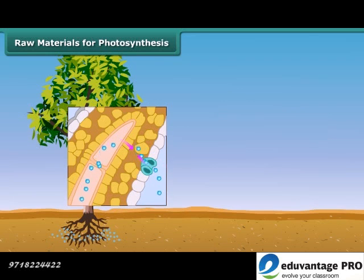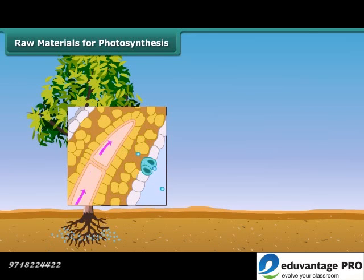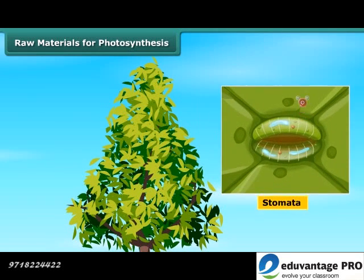Likewise, carbon dioxide from air is taken in through the tiny pores present on both surfaces of the leaves. Such pores are called stomata, and these pores are surrounded by guard cells.